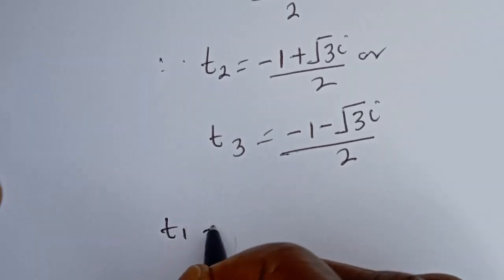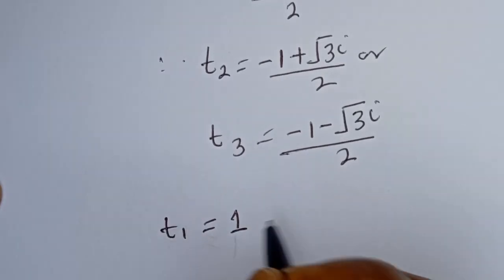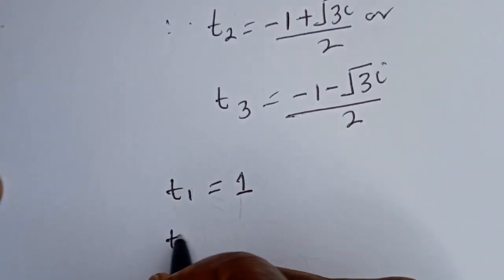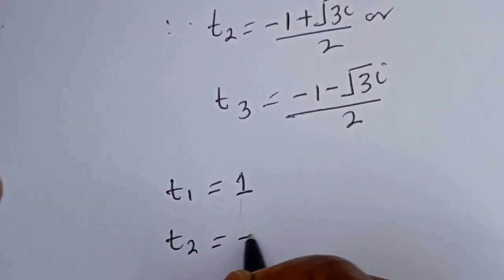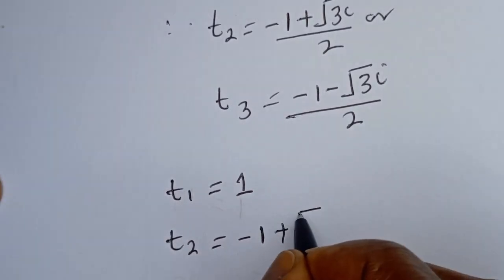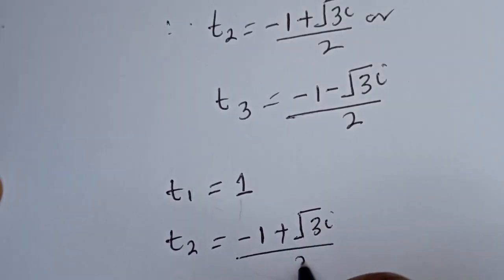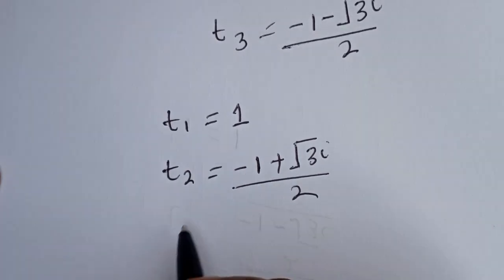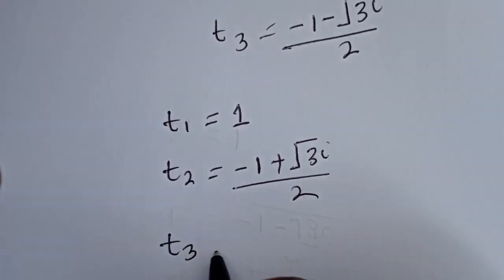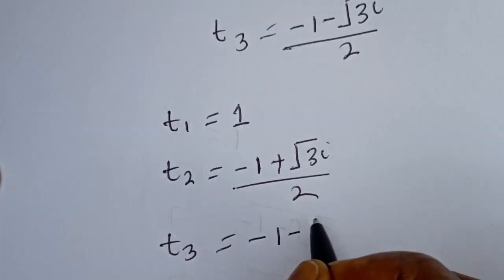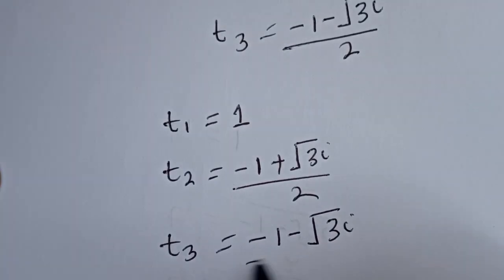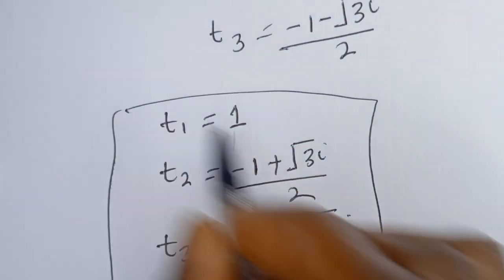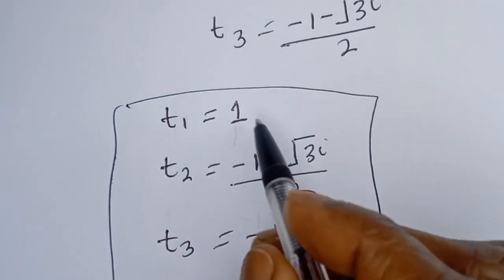So the three roots are: t = (−1 + i√3) / 2, t = (−1 − i√3) / 2, and t = 1. We can see that we have two complex solutions and one real solution.